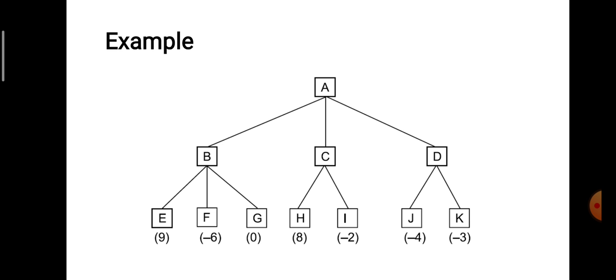suppose these nodes are the possible moves made by the opponent or you can say Min. If you try to reconsider the terminology from Minimax algorithm, then you can consider these moves made by Min or generally you can say that by player two.